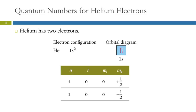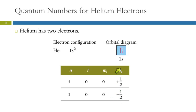Helium has two electrons. Both occupy the lowest energy orbital, the 1s. When n equals 1, l can only be 0, and when l is 0, m_sub_l is also 0. So both electrons share quantum numbers 1, 0, 0 — the fourth quantum number must differ, so one is plus one-half and one is minus one-half. In the orbital diagram, one arrow points up and one points down.